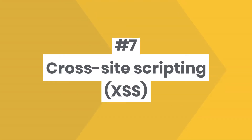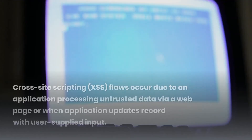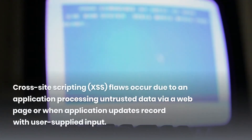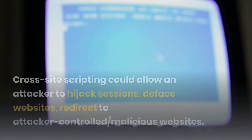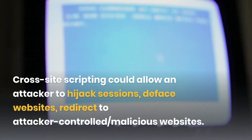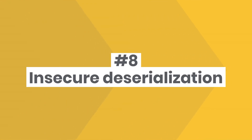7. Cross-site Scripting (XSS). XSS flaws occur due to an application processing untrusted data via a web page, or when an application updates a record with user-supplied input. Cross-site scripting could allow an attacker to hijack sessions, deface websites, or redirect users to attacker-controlled malicious websites.